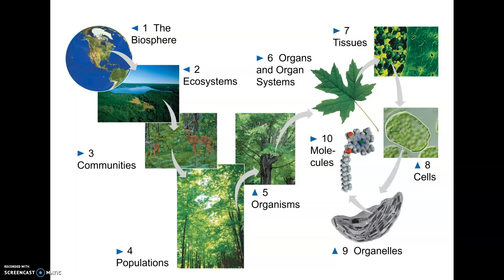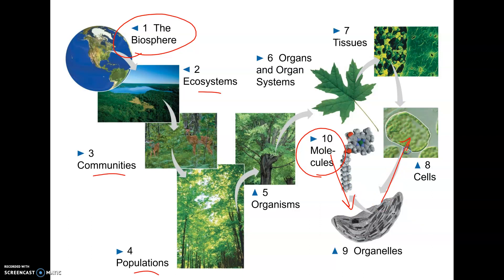The biggest level is the biosphere, which is the entire area of Earth where living things can exist. Then we work our way down through ecosystems — there are many ecosystems in the biosphere — then communities, then populations, getting more specific as we go. At the smallest level, molecules and atoms compose organelles, which combine to form cells, and so on up. These are our levels of organization.